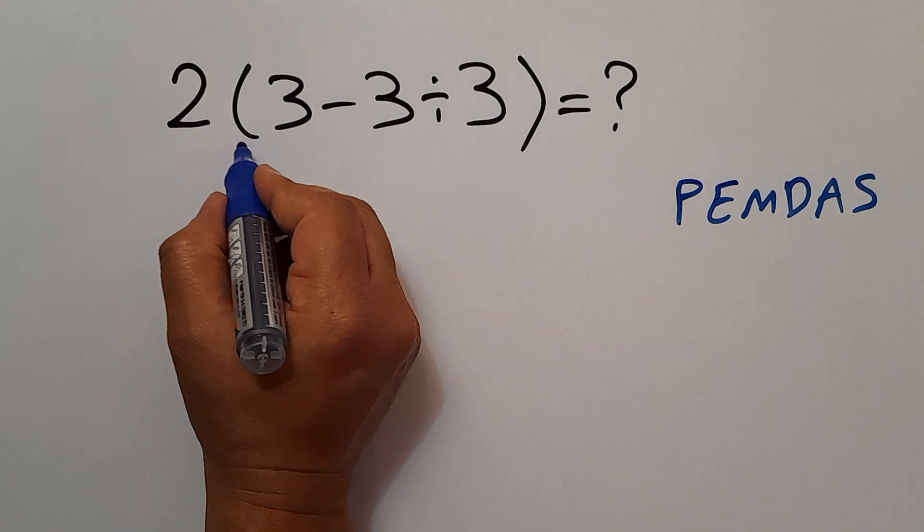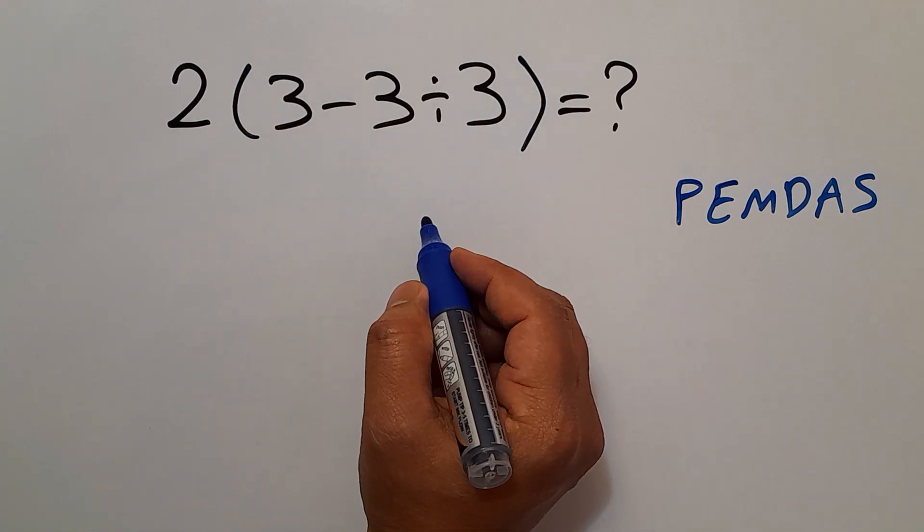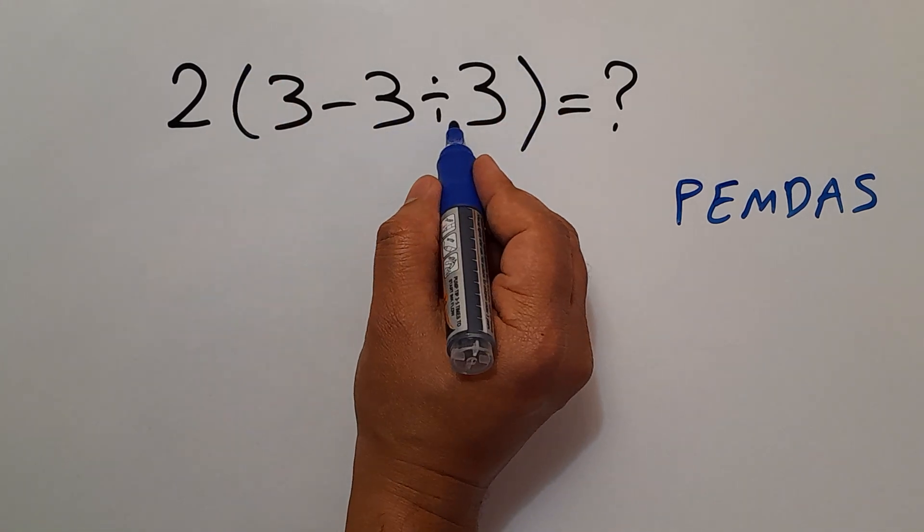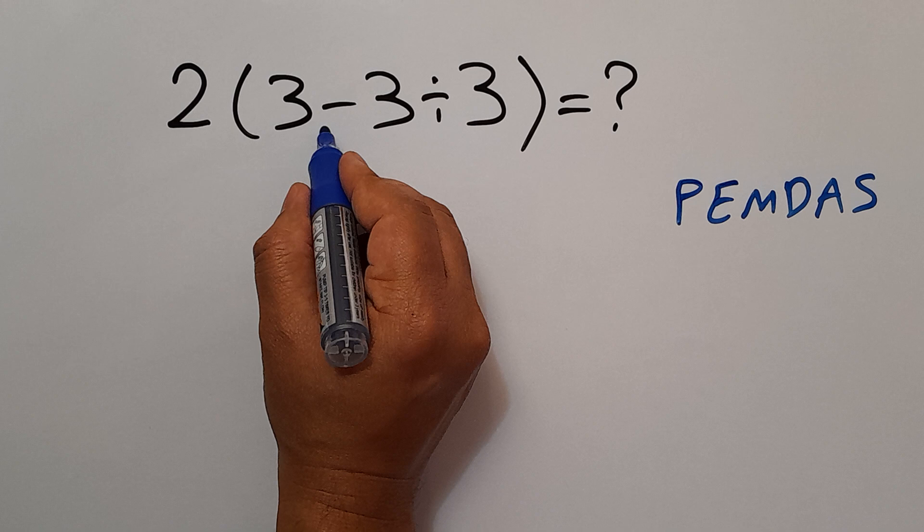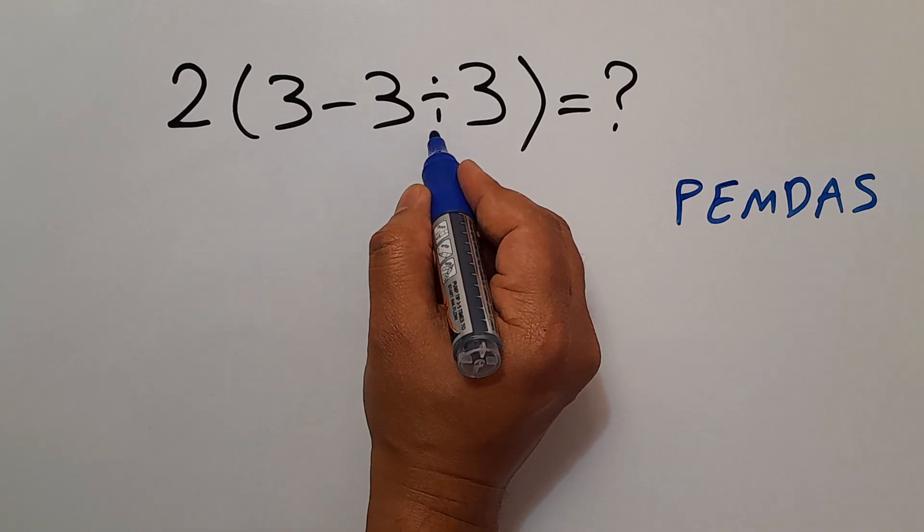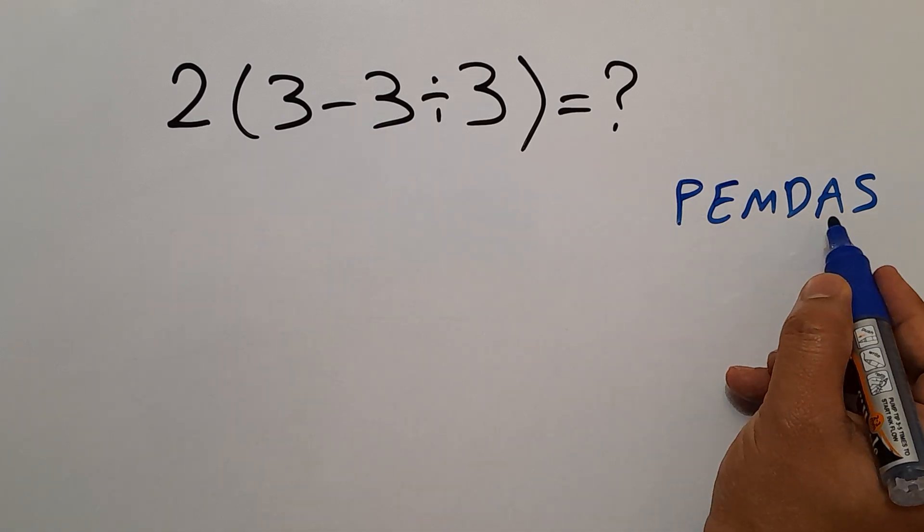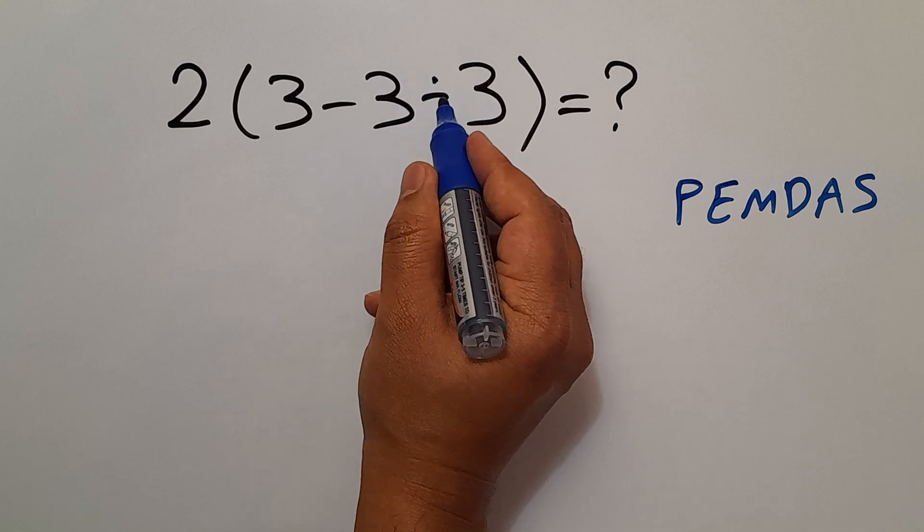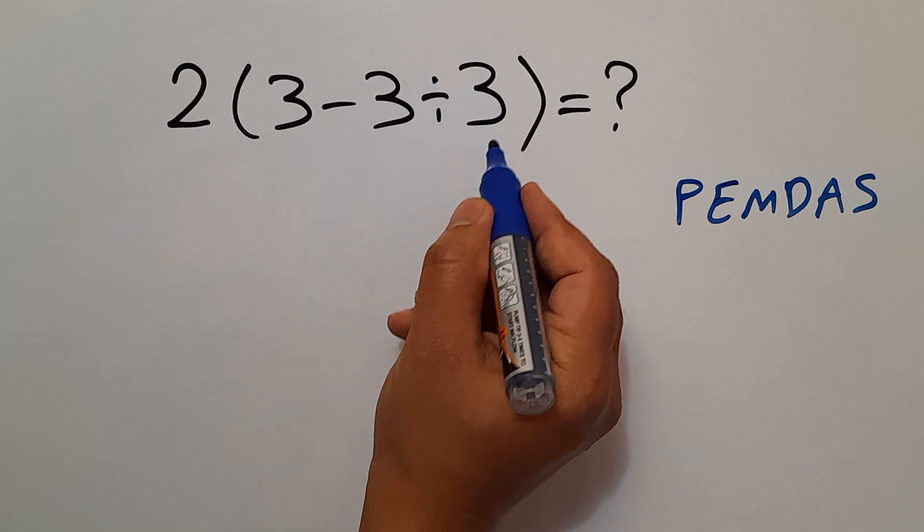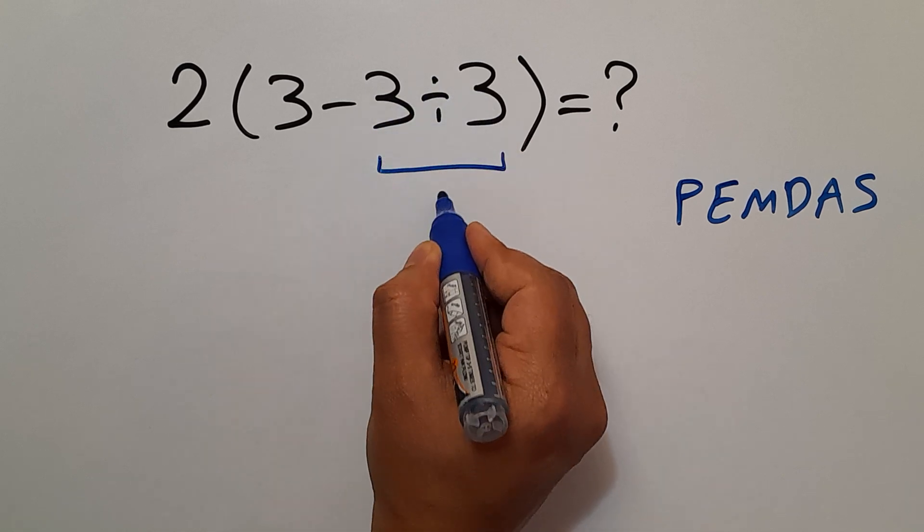So here, first we have to do these parentheses. And inside these parentheses, we have one subtraction and one division. According to PEMDAS, first we do this division. 3 divided by 3 is equal to 1.